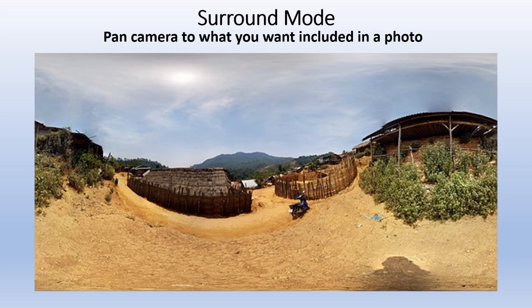Next is Surround Mode. This is where you pan the camera to wherever you want to include in the photo. A normal picture just shows what's in the viewfinder, but by moving the camera around you can choose all the objects you want included. There may appear to be some distortion in the resulting view — that's so the mode can include everything you wanted to show in that picture.